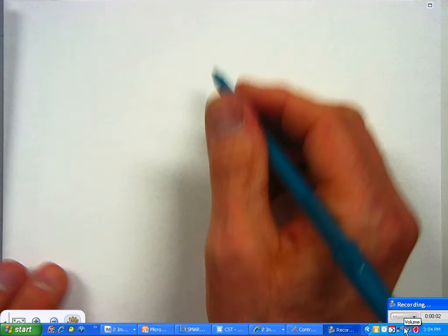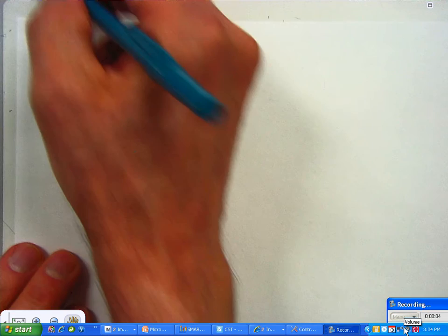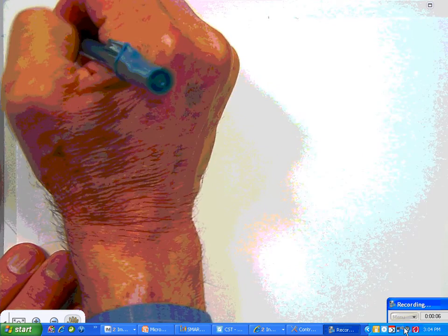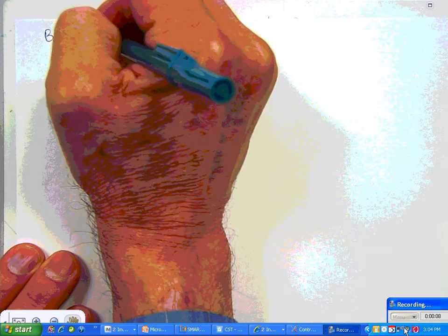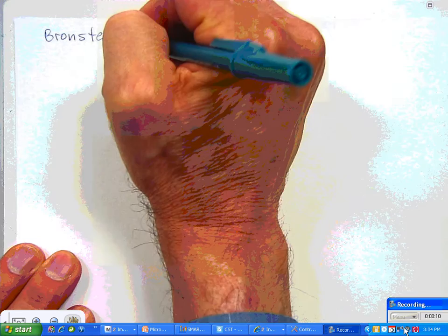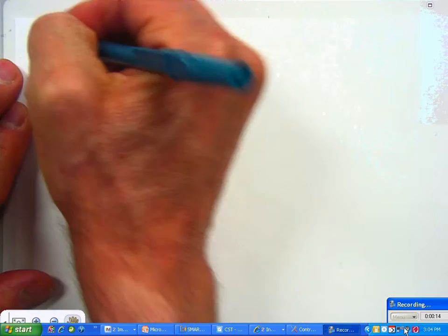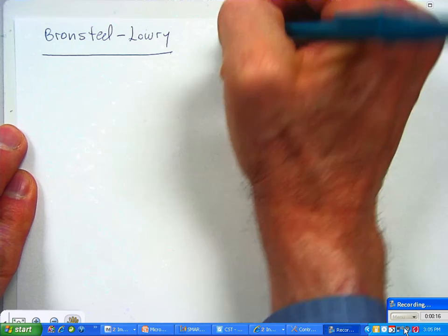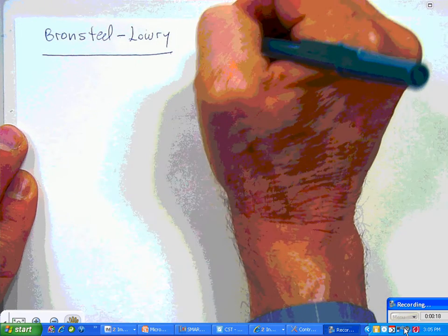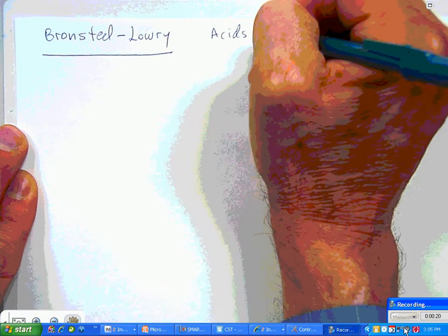Okay, we're starting. Now, what we're going to be doing today is talking about Bronsted-Lowry, B-R-O-N, S-T-E-D, Lowry, L-O-W-R-Y, and this is going to be on their theory of acids and bases.